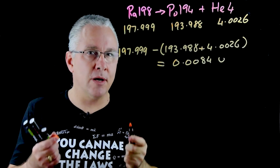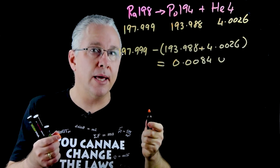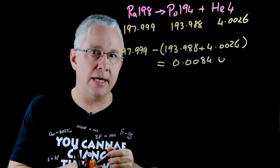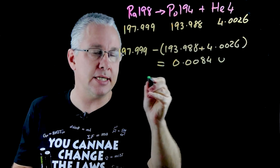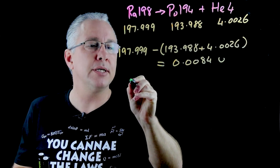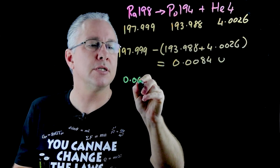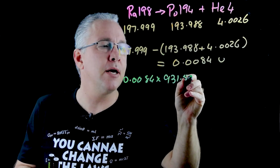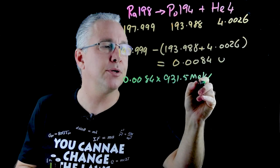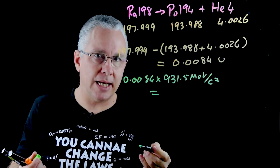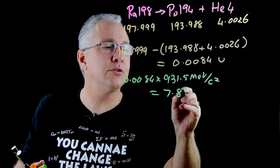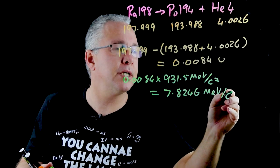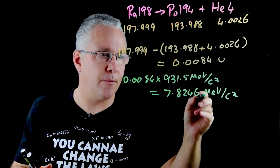Now remember our atomic mass unit is equivalent to 931 mega electrovolts per c squared. So what we can now do is say okay our mass equivalent is equal to 0.0084 multiplied by my 931.5 mega electron volts per c squared. When we calculate that out we get 7.8246 mega electron volts per c squared. Remember this is a unit for mass.